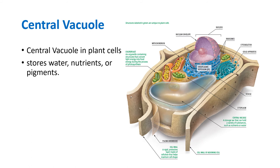A central vacuole is also found in plant cells — human cells do not have a central vacuole. Plants have central vacuoles as a storage unit, where they store things like water and nutrients.